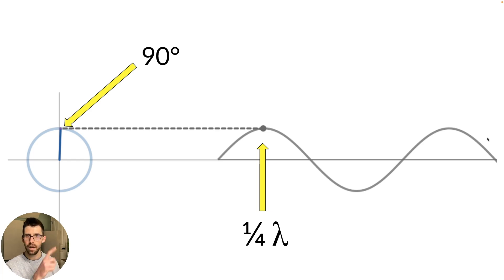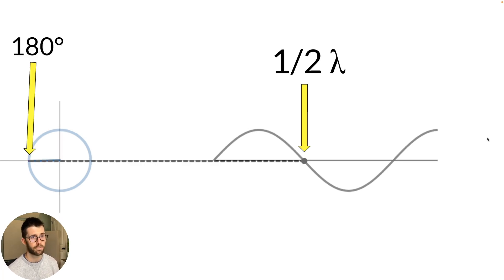But if we stopped it a quarter of the way through its cycle, that'd be the same thing as saying we stopped at 90 degrees of the way through its cycle. We can keep moving. 180 degrees is the same thing as it moving a half wavelength or going halfway through its cycle.